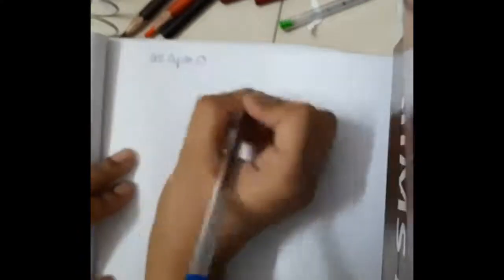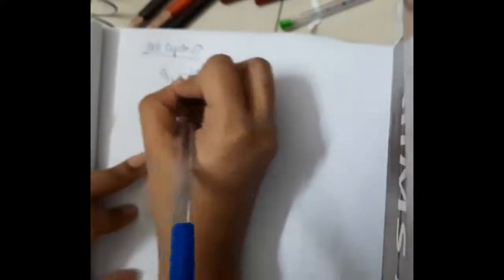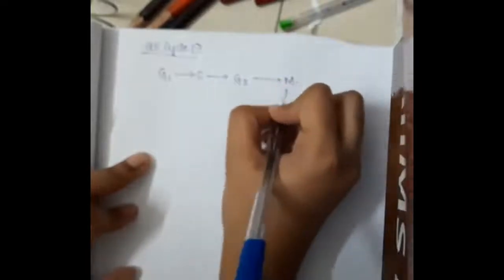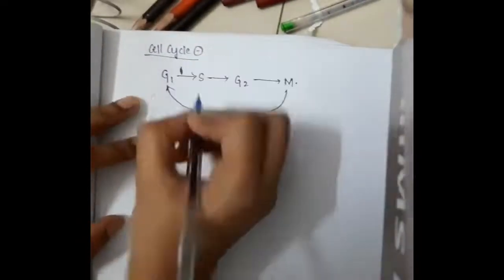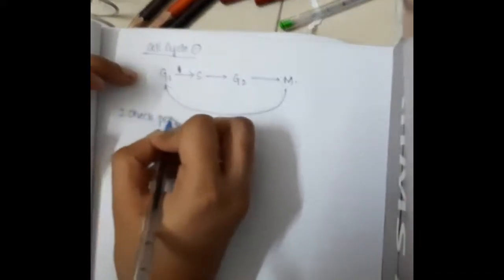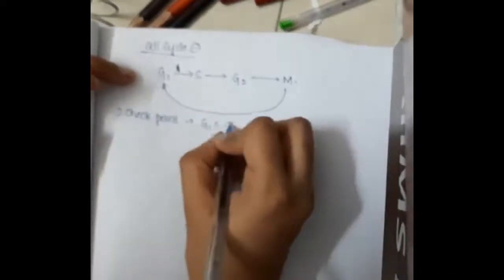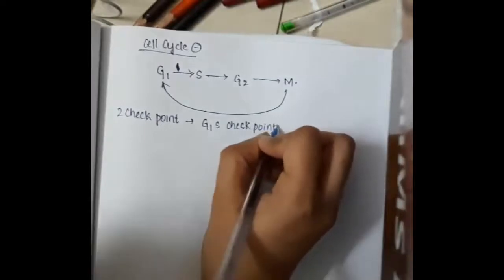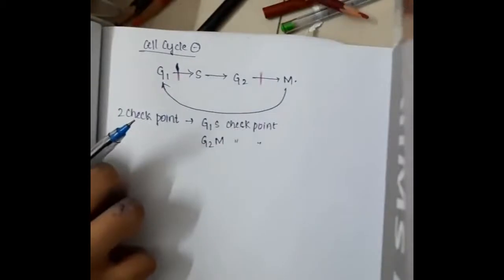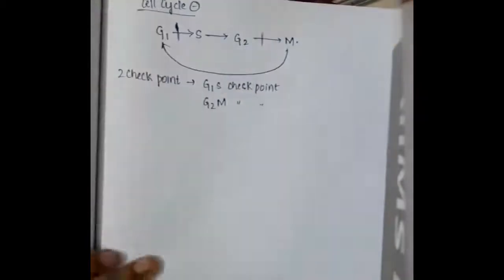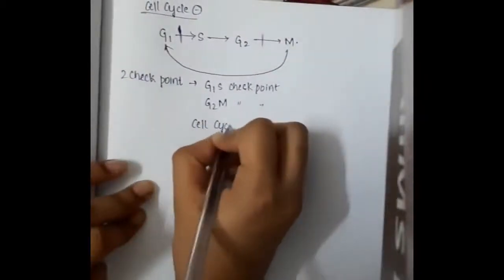Now if you see the cell cycle inhibitors - cell cycle from G1 to S, then S to G2, G2 to M, and M to G1. There are two checkpoints: from G1 to S checkpoint and from G2 to M checkpoint.